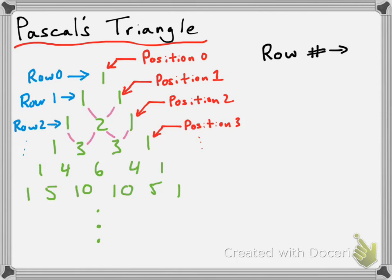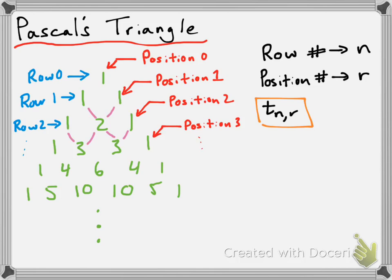This is going to allow us to uniquely identify or name each term in Pascal's triangle by its row number and its position number. The row number of any particular term is going to be given by the letter N, and the position number of any particular term is going to be given by the letter R. We're going to say T(N, R) is going to be the term in row N at position R. Because each term has a unique row and position, this allows us to uniquely name each term in Pascal's triangle.